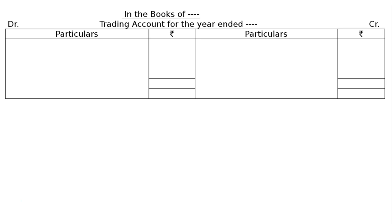We are supposed to find gross profit from the following. In the books of [firm name], we draw the Trading Account for the year ended. We draw the format with particulars and rupee columns on both the debit and credit sides, then post all the items to find out gross profit. We can also use the formula.